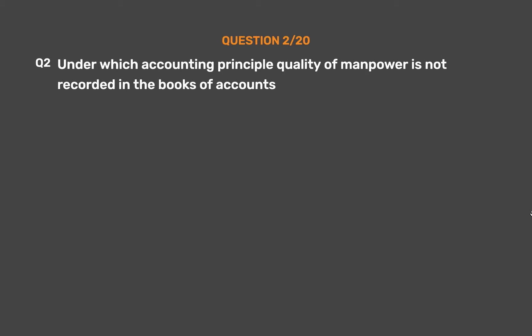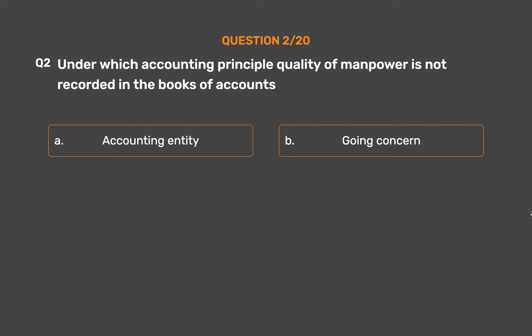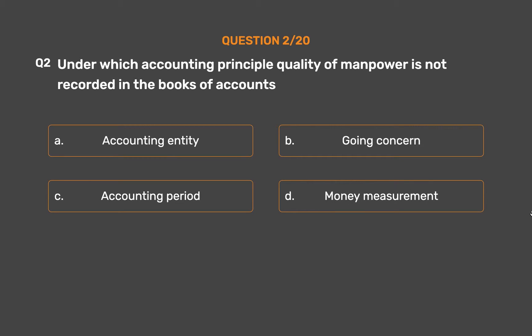Question No. 2: Under which accounting principle is quality of manpower not recorded in the books of accounts? Option A: Accounting Entity. Option B: Going Concern. Option C: Accounting Period. Option D: Money Measurement.